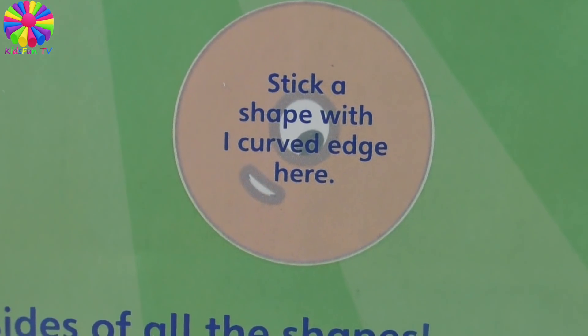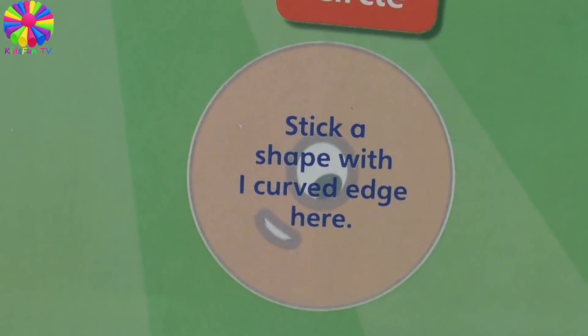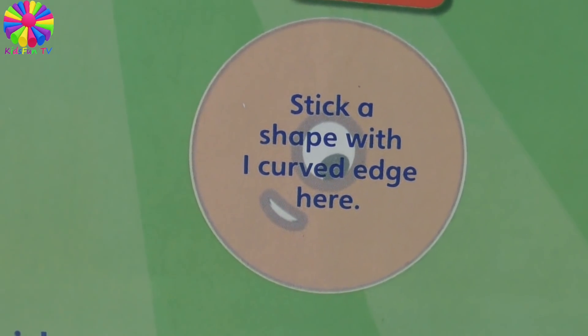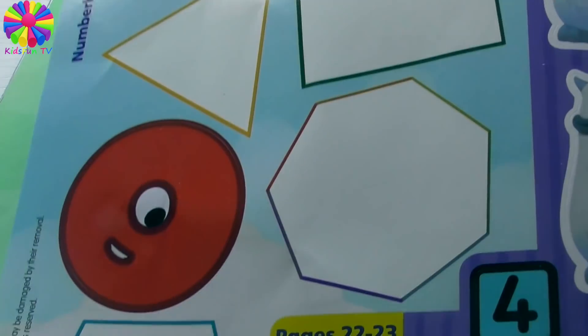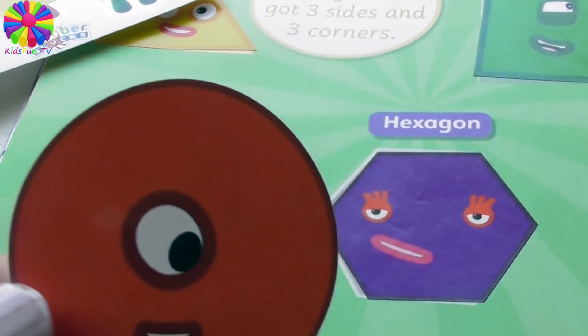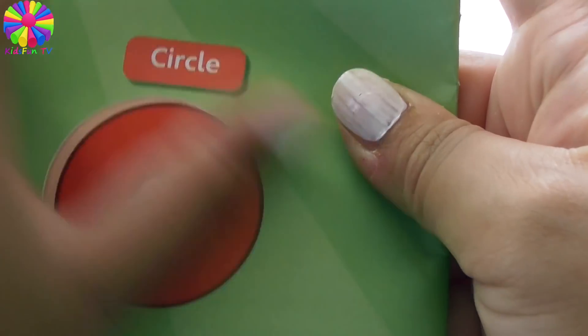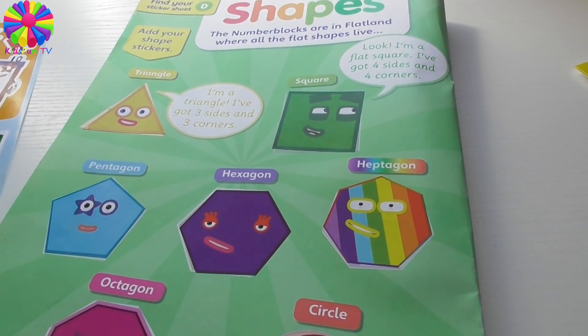Stick a shape with one curved edge here. This one doesn't have any sides — do you know which one it is? There's only one left, no more side shapes — so it's Numberblock One! Numberblock One has one curved edge, so we're going to stick number one here. Which shape is it? It's a circle!